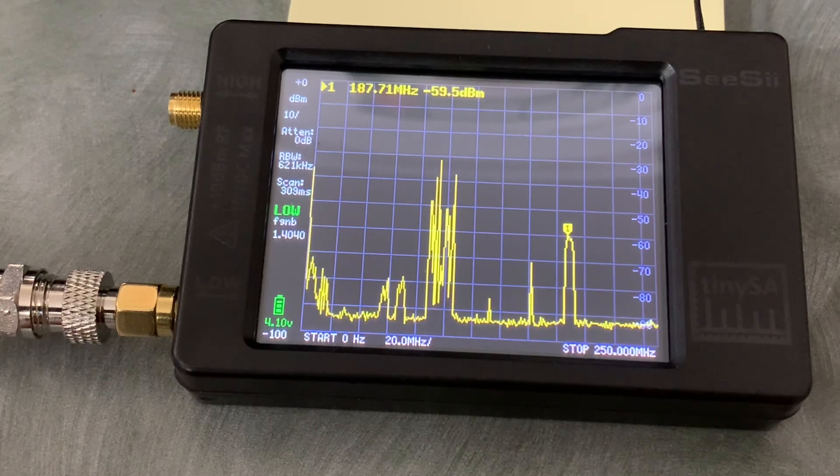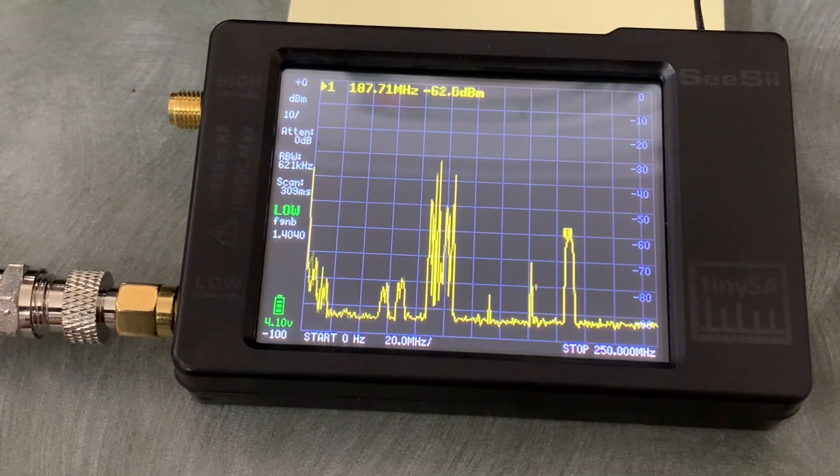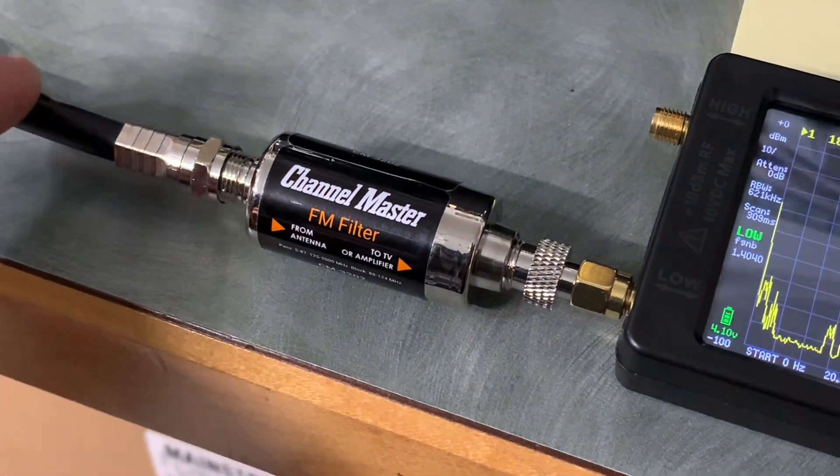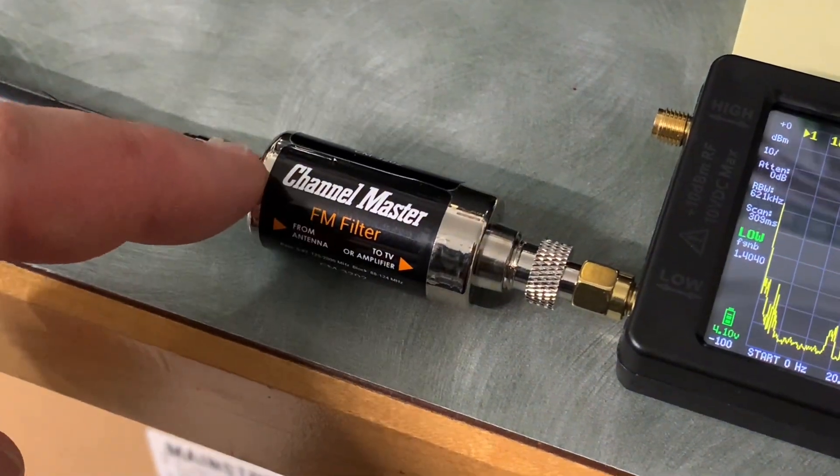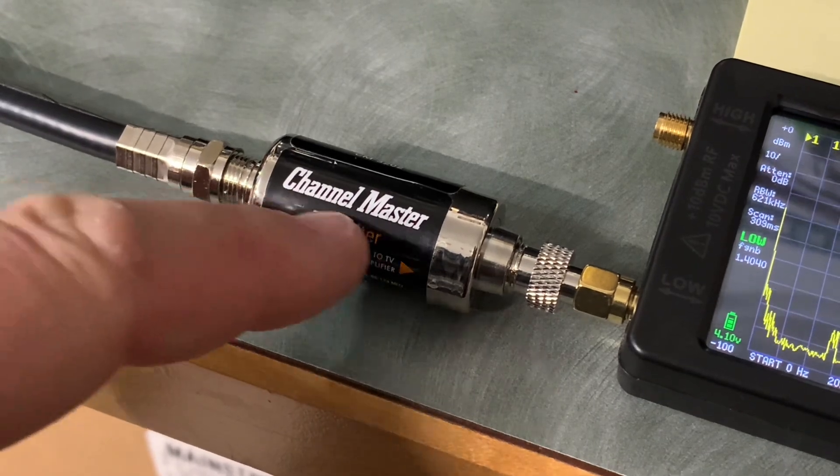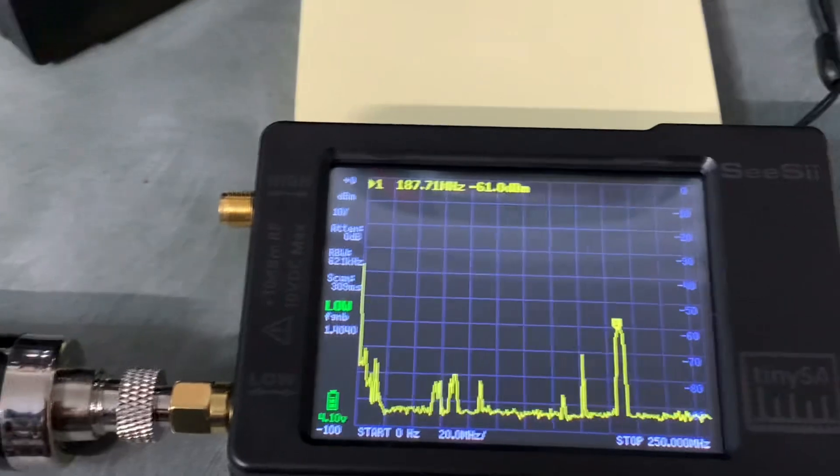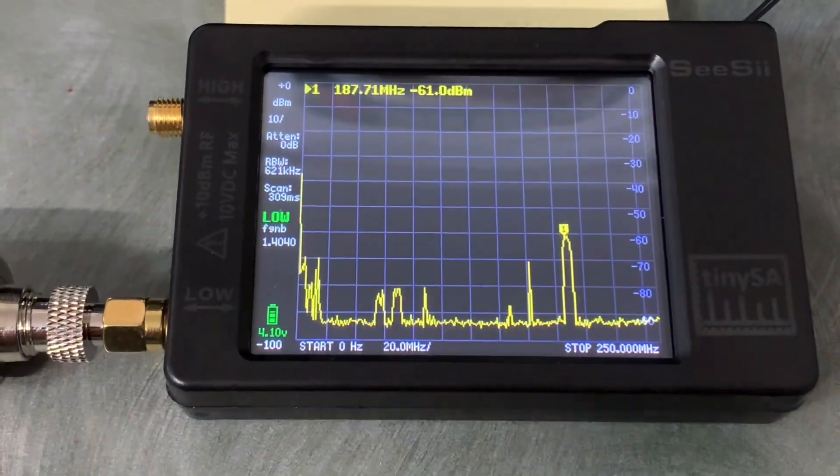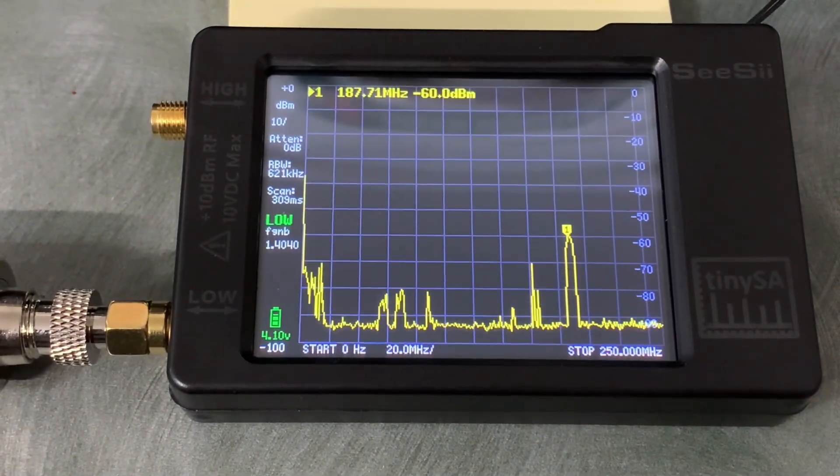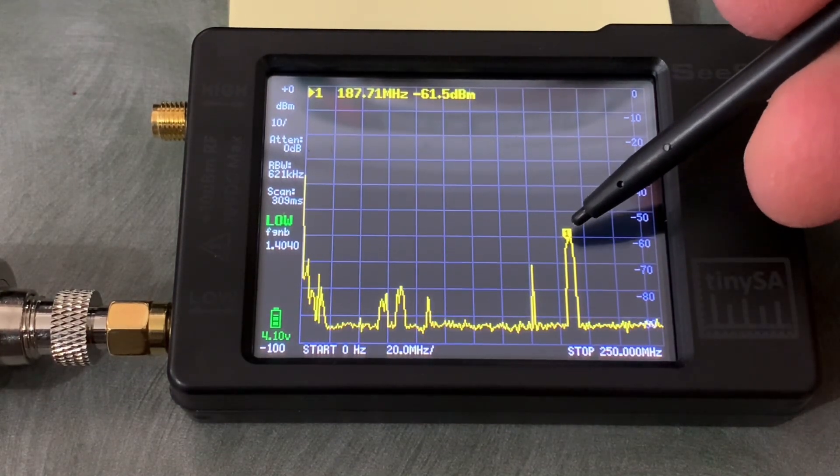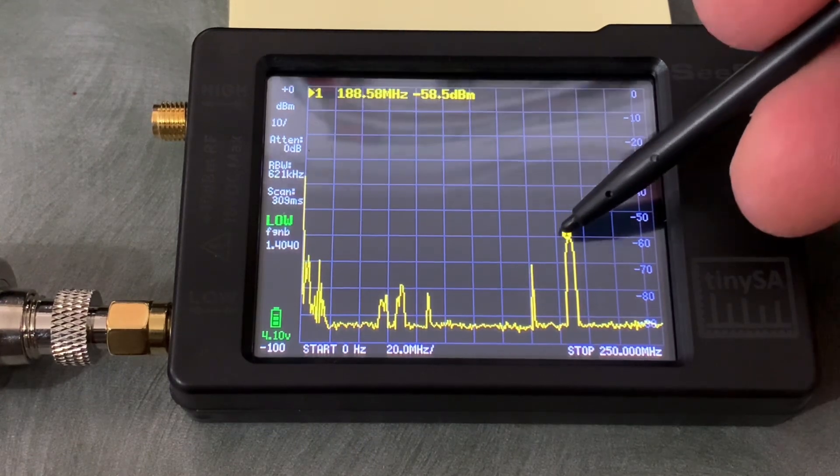Now we'll connect that FM filter and see if we notice a difference on the spectrum here. So I've got the FM filter inline—this side is the antenna coming in and the FM filter works here, and then the output goes to the spectrum analyzer. And you can see a big difference on the spectrum here.